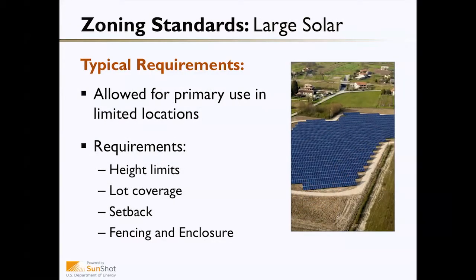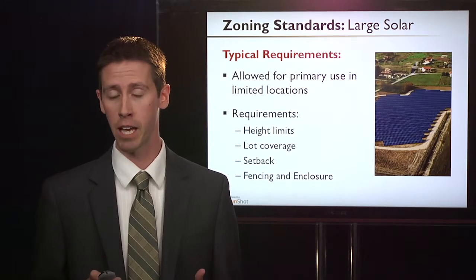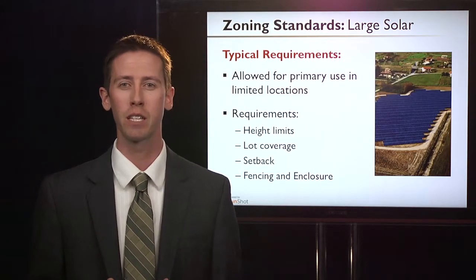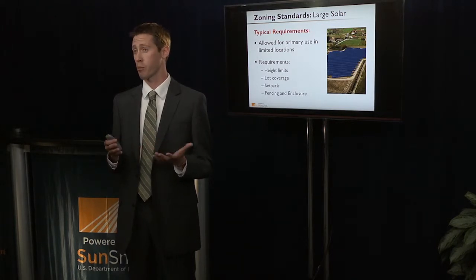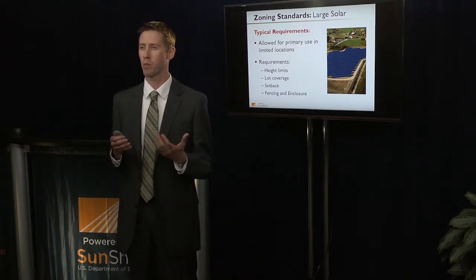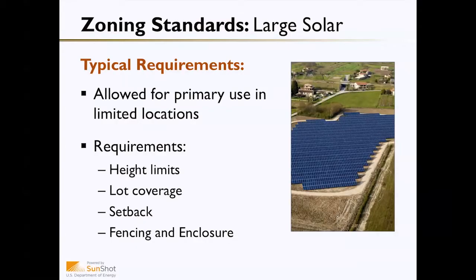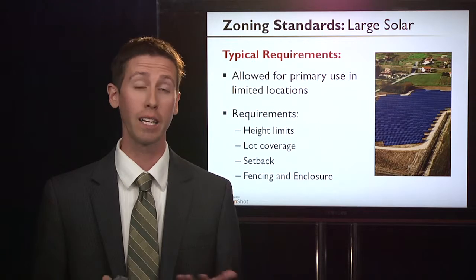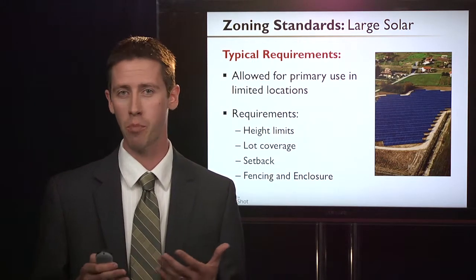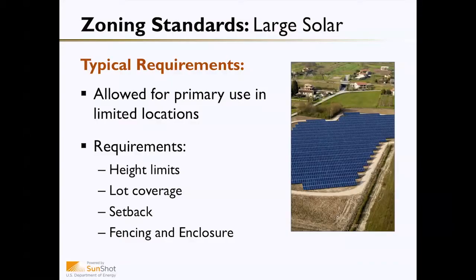For large solar installations, large systems would generally be allowed as a primary use in limited locations. Capped landfills or brownfield sites may be particularly advantageous for large ground-mounted systems, since these lots are not being used for other purposes. Requirements in the zoning standard for large systems may include height limitations, lot coverage, setbacks for safety, and fencing or enclosures to keep animals or other people from wandering onto the property containing the PV system.